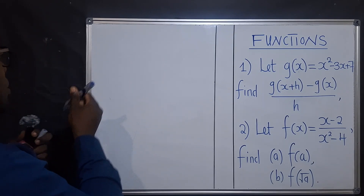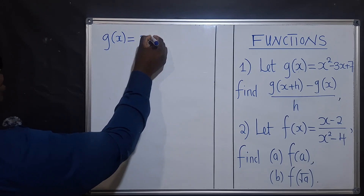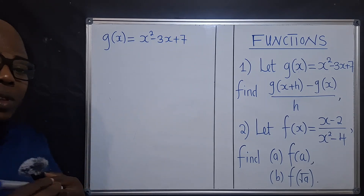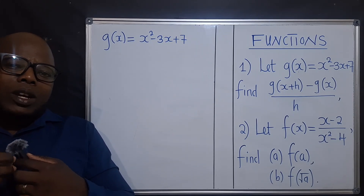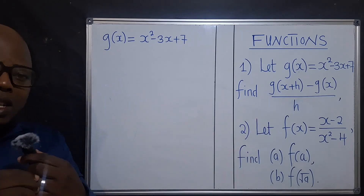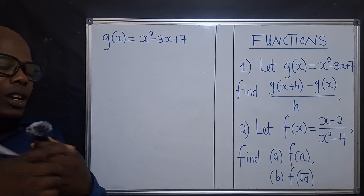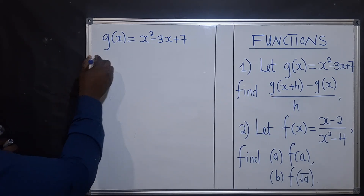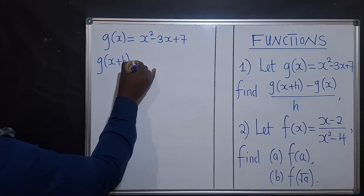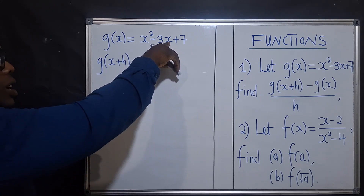To work out this, we need to understand something. The given function is g of x, which is x squared minus 3x plus 7. So this is the function we have right here. And we already have one to substitute at g of x, which is this one. So for g of x plus h, we'll simply substitute x plus h wherever we see x.